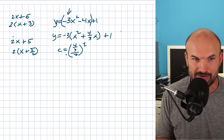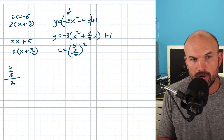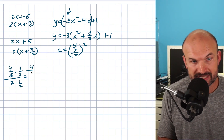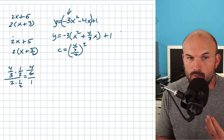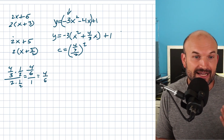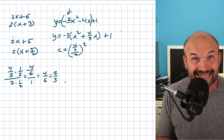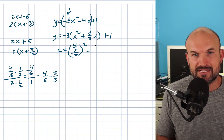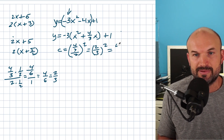Dividing four thirds by two — you can multiply by the reciprocal one half. So four thirds times one half gives four over six, which reduces to two thirds. Dividing by two is the same as multiplying by one half. So two thirds squared is two thirds times two thirds, which is four over nine. That is the value I'm going to add inside my parentheses.